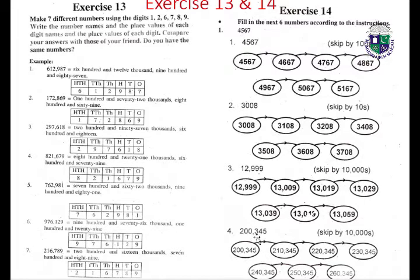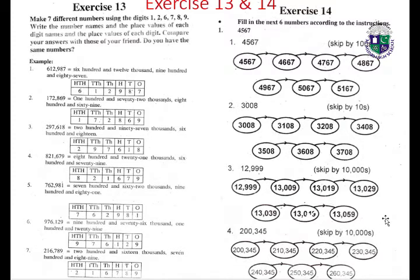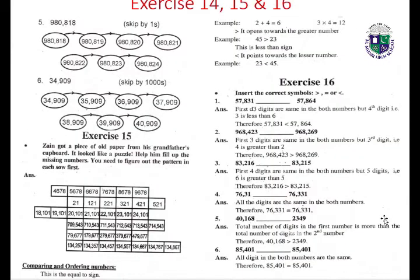1,100,000; 10,000,000; 2,200,000; then: 200,345; 210,345; 220,345; 230,345; 240,345; 250,345; 260,345.